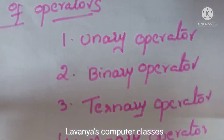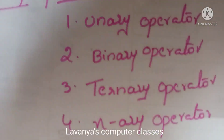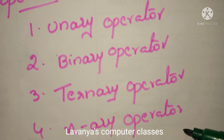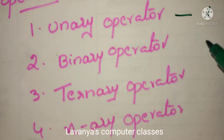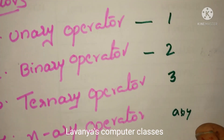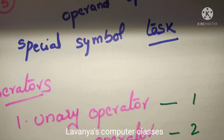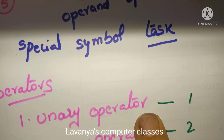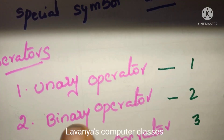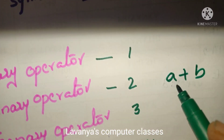These are called the categories of operators. In this video, we will go through the definitions of these operators. Unary means 1, binary means 2, ternary means 3, and n-ary means any number more than 3. A unary operator works with only one operand. A binary operator works with two operands.